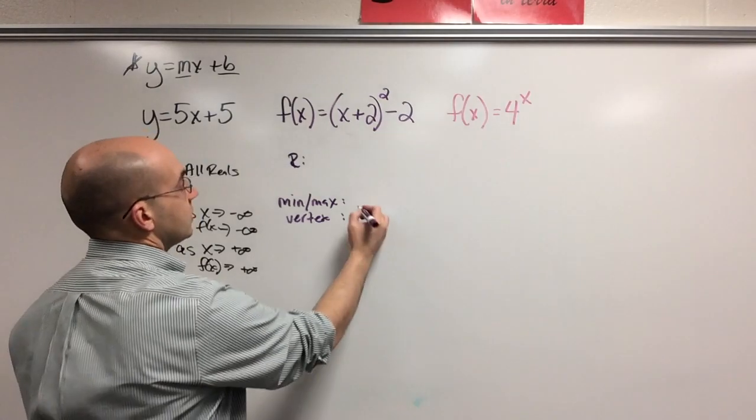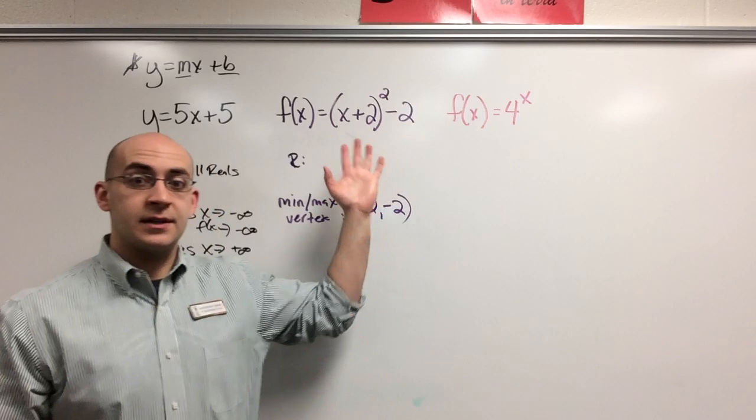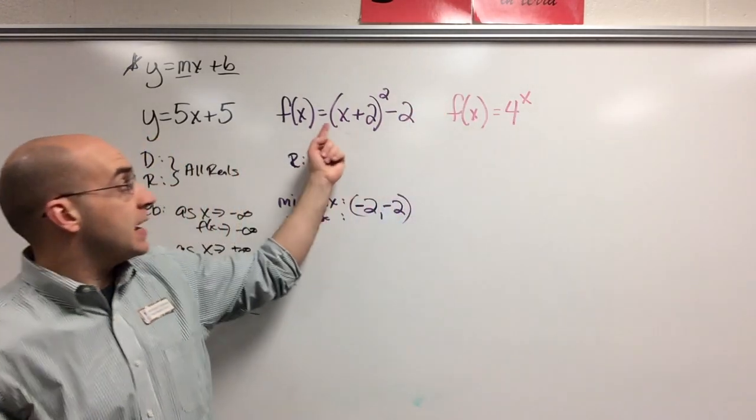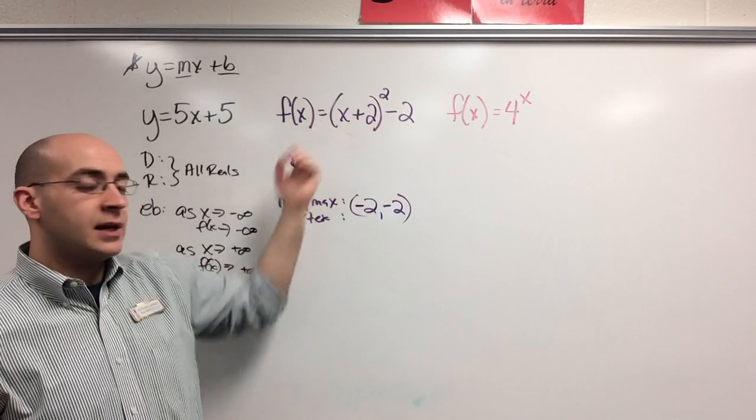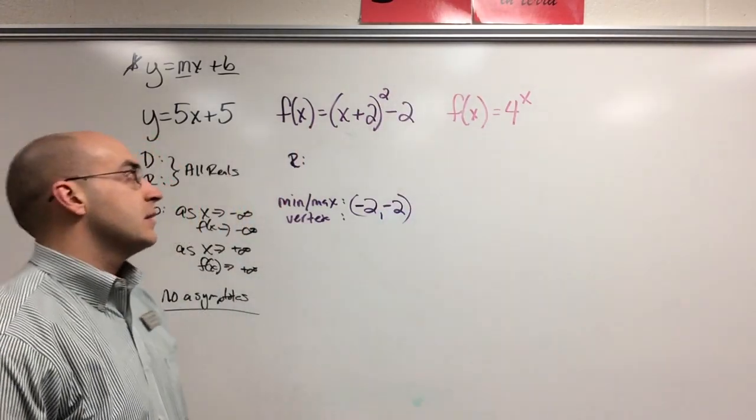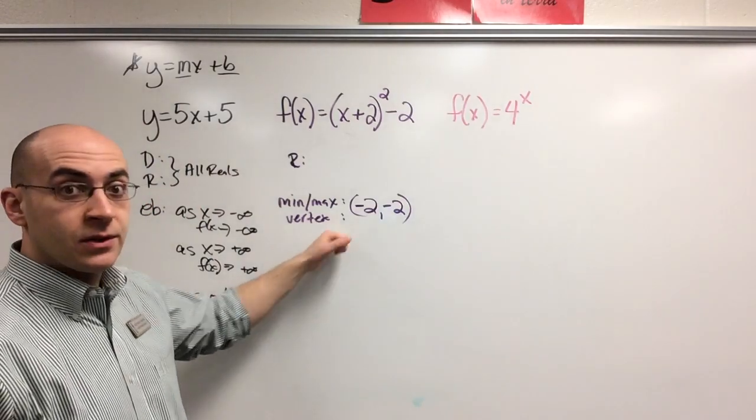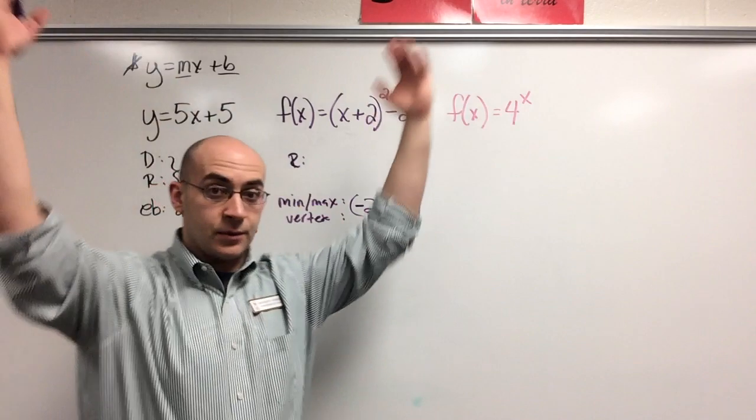The vertex is always the opposite of this and exactly that. So the vertex is negative 2, negative 2. And we know, based on the characteristics of this function, that this function opens up because there's no negative transformation on the front. So negative in the front implies an x-axis reflection. So there is no x-axis reflection, so I know for sure this is going to be a minimum value because it opens up, which means it has a minimum.